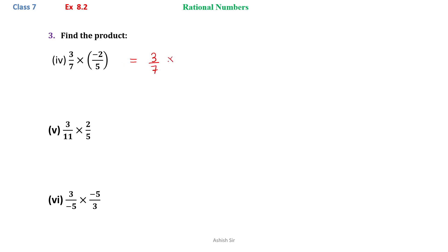Here we will remove the bracket. We have 3 by 7 multiply minus 2 by 5. We see that none of the numerator is divisible by denominator, so we will just multiply numerators with numerator. So 3 to the 6, that is minus 6 here, and 7 to the 5 is 35. So our answer is minus 6 by 35.